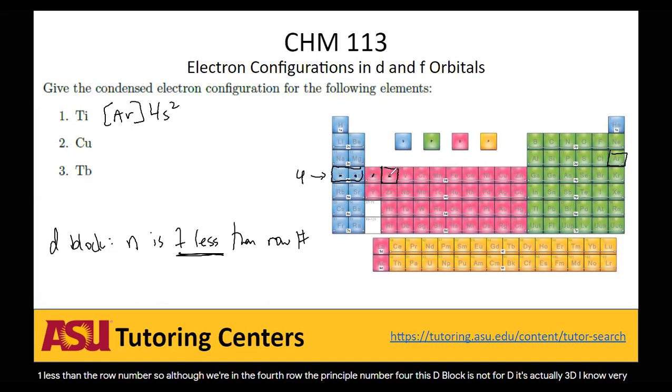So instead of writing 4d² for this, we would actually write 3d². And in fact, because this principal number three is smaller than principal number four, we would actually have to write it the other way. We would not write 4s² 3d². We would write the 3d² first, then the 4s². This comes from the fact that you have to fill up the energy levels in increasing order. So we would want to get electrons into the 3d orbital before we start getting electrons into the 4s orbital.